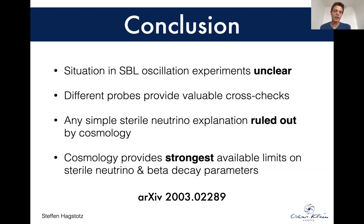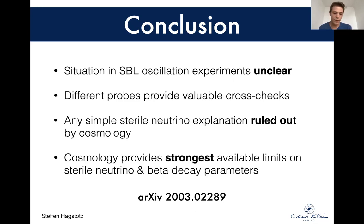Let me conclude. The situation in short baseline oscillation experiments is still very much unclear — something is going on there that we don't understand. What we do know now is that it can't be a simple sterile neutrino, because that would be seen by cosmology. Cosmology completely rules out any simple sterile neutrino explanation. If you want to accommodate a sterile, you have to include more new physics to accommodate something like N_eff of four, and that's very challenging. Also in general, cosmology provides the strongest currently available limits on the beta decay parameters. That's something new that we found, and you can read the paper. I'm looking forward to the discussions.